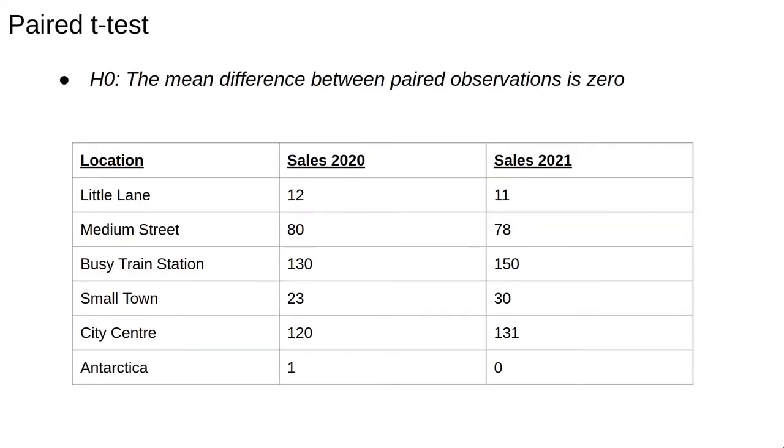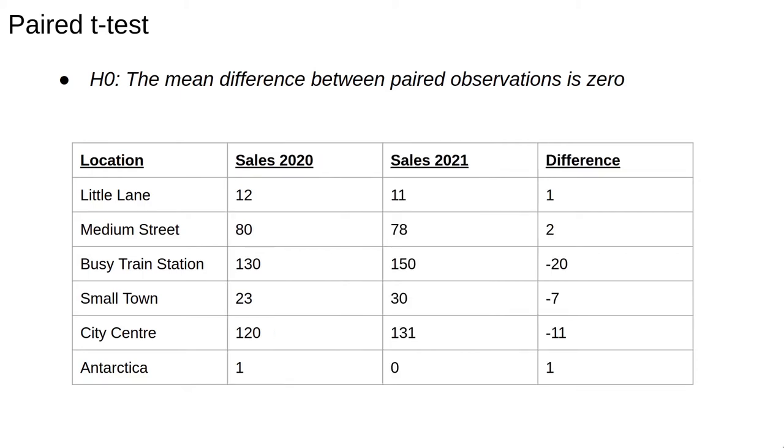Instead of looking at the two groups separately, we instead analyze the differences using a t-test. This is called a paired t-test. The null hypothesis is that the mean difference between the paired observations is zero. In practice, we simply compute the differences between pairs and perform a one-sample t-test.